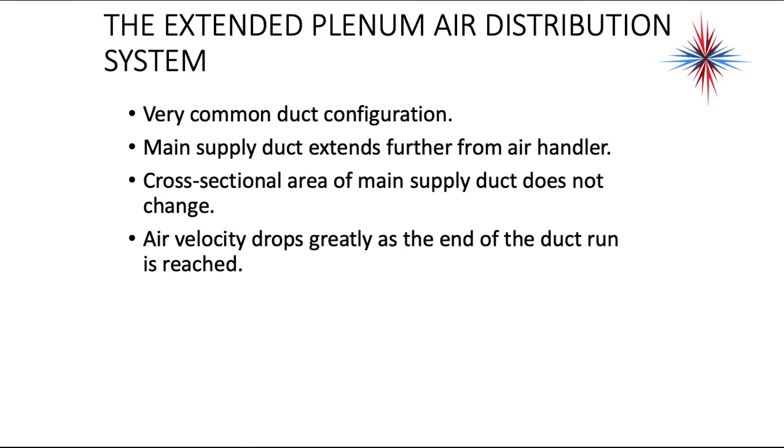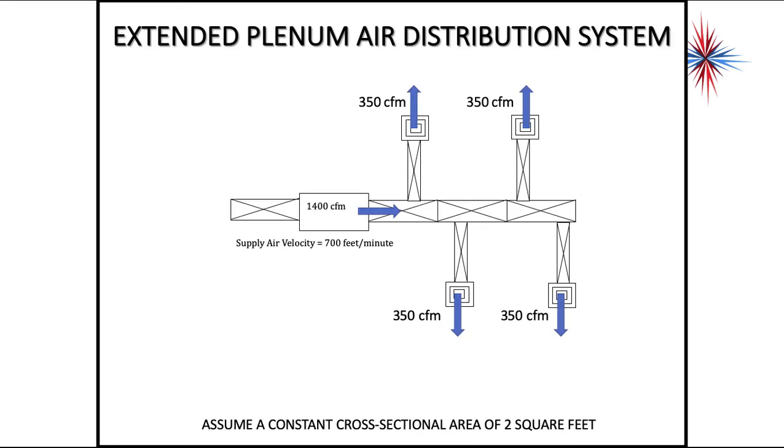The extended plenum air distribution system, which is what I just showed you, is a very common duct configuration. The main supply duct extends out further from the air handler. The cross-sectional area of the main supply duct does not change, so it's one size. So if at the air handler, it's 24 by 36, it is going to be that size all the way down through the end of the duct. The air velocity drops greatly as the end of the duct run is reached, because there's nothing going on to maintain velocity.